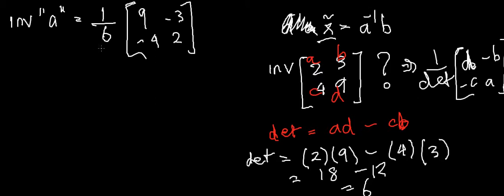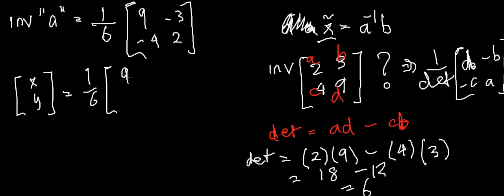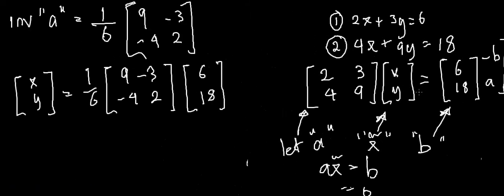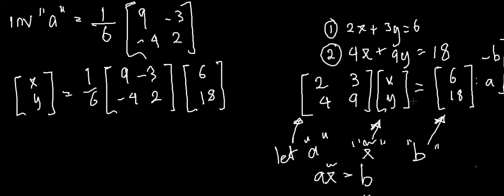Once we have our inverse, all the hard work is done. We can say that x-squiggle, which is the matrix [x, y], equals A inverse — which is 1/6 times the matrix [9, -3, -4, 2] — multiplied by B, which was our original constants [6, 18].